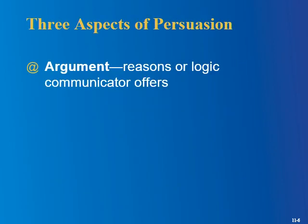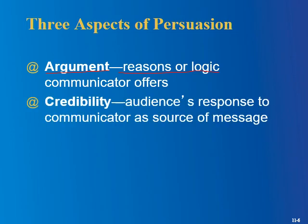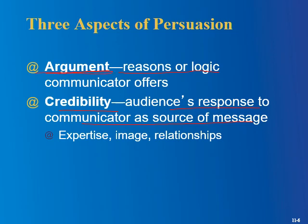The three aspects of persuasion — if you've taken a rhetoric course, they use Aristotle and talk about ethos, logos, and pathos. This book uses plain English but covers the same basic stuff. The argument — the reasons or logic that the communicator offers — is what we would call logos in the classical rhetoric tradition. So if you're arguing about a car, the salesperson knows the cost, gas mileage, speed, and how it compares to rivals — logical reasons why this car is better.